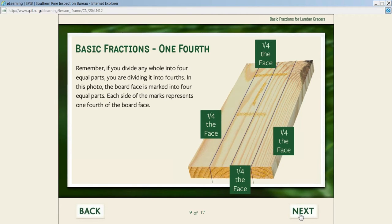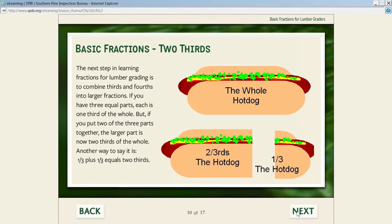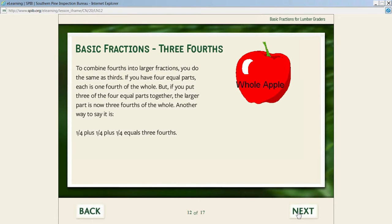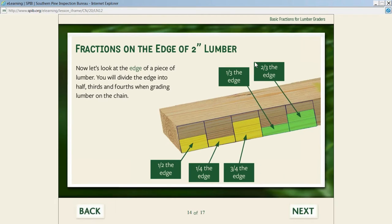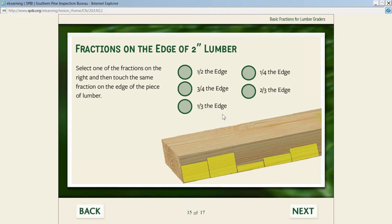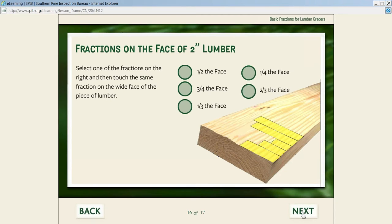We talk about what a quarter is and how that applies to the wide face, then two-thirds—showing two-thirds versus a third and how that applies to the wide face—then three-fourths and how that applies to the wide face. Then we apply these same fractions to the edge of the piece. There's lots of interaction in this lesson without testing, so it encourages the student to learn on their own at their own pace. If a student selects the wrong fraction, it tells him he's wrong; when he clicks the correct one, it tells him he's correct. He can do that on the edge and for all fractions on the wide face.